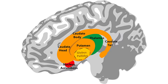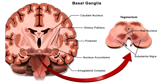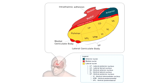The globus pallidus, internal and external, and the substantia nigra pars reticulata, which make up the pallidum, and the ventral lateral and ventral anterior nuclei of the thalamus, abbreviated VL and VA nuclei.